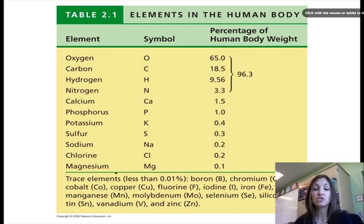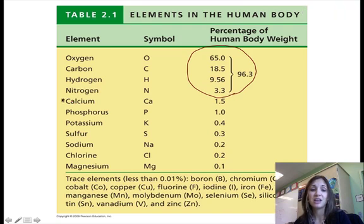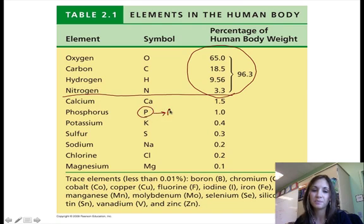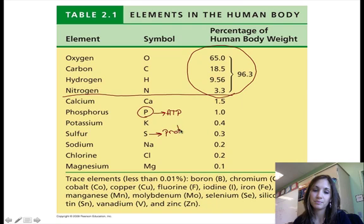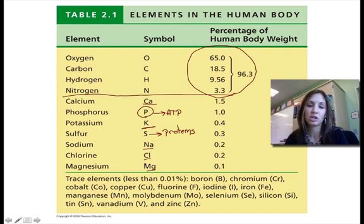Here you can see that the majority of human body weight is carbon, hydrogen, oxygen, and nitrogen — just over 96%. Those are the really important ones. Phosphorus is really important in ATP, which is energy production — your cell's energy currency. Sulfur is also really important in proteins. Calcium, potassium, sodium, chlorine, and magnesium are all essential elements required for the human body to function well, but you can see they're available in much smaller quantities within the body.